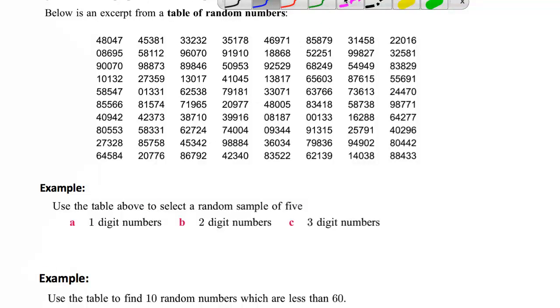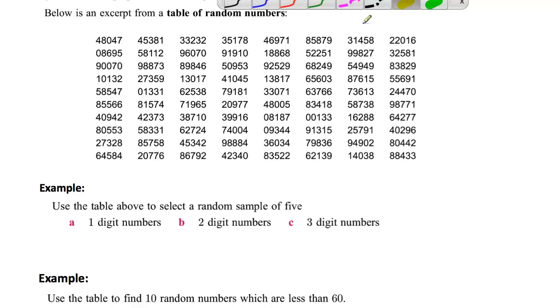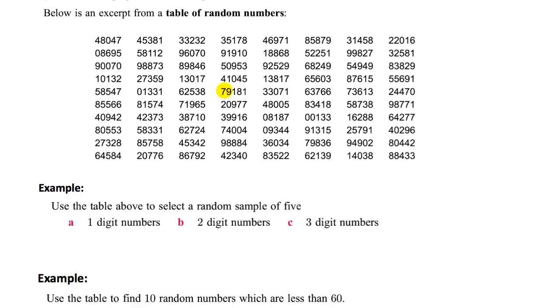So the idea would be to start somewhere randomly. You could basically close your eyes and just pick a number and start there. Let's say that we close our eyes and pick a number down here, say number seven. Now I know I've covered up the nine as well, but let's look at just the number seven there. So there it is. Now the idea would be simply to go off either to the right or the left or straight up or straight down, and the numbers would be random.